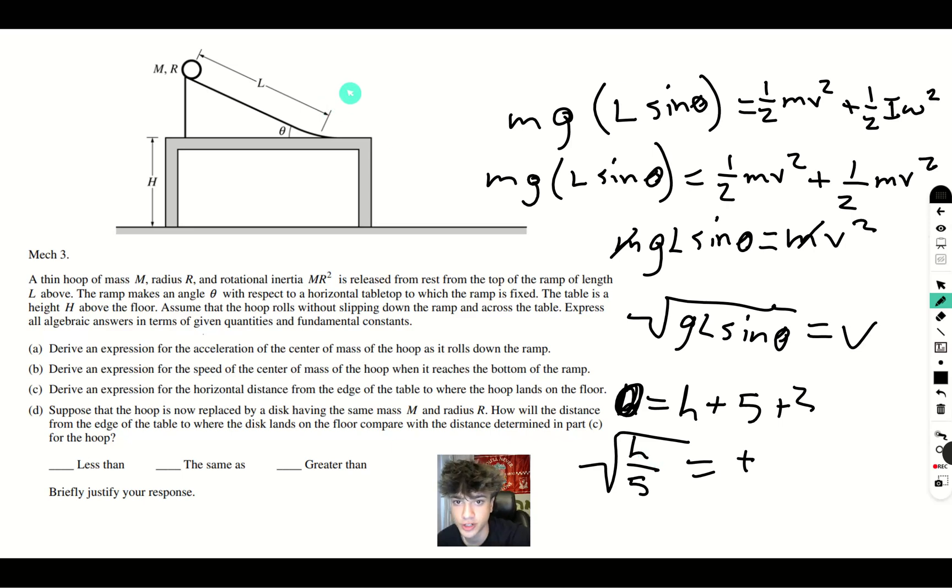So, a disk has the inertia of 1 half M R squared. And that means that the rotational kinetic energy will be less, meaning that less of the kinetic energy will be going towards rotating. And therefore, more of the kinetic energy is able to go towards translating. So, the ball will be translating faster horizontally, so it will land further away.